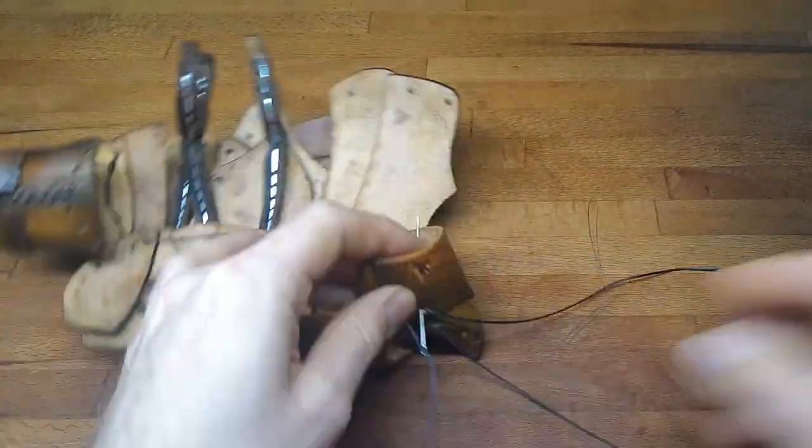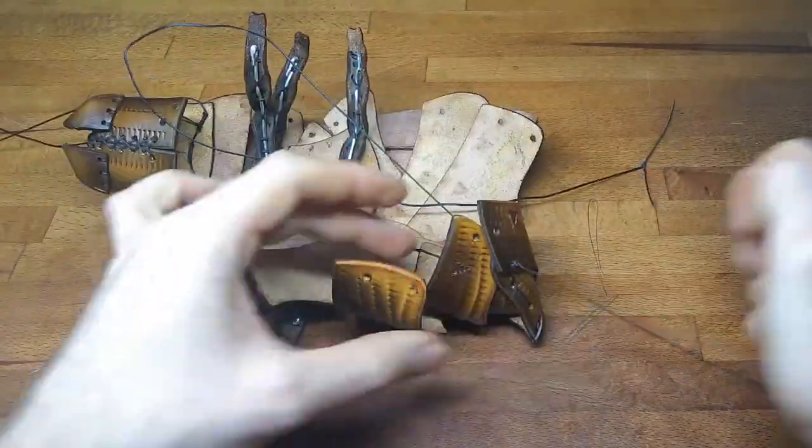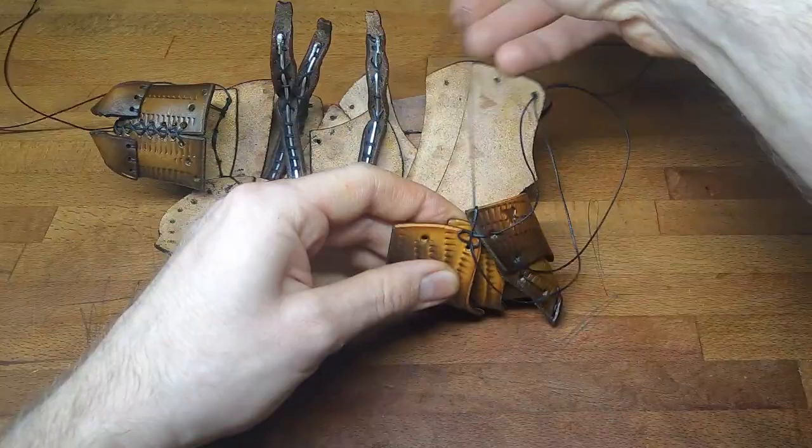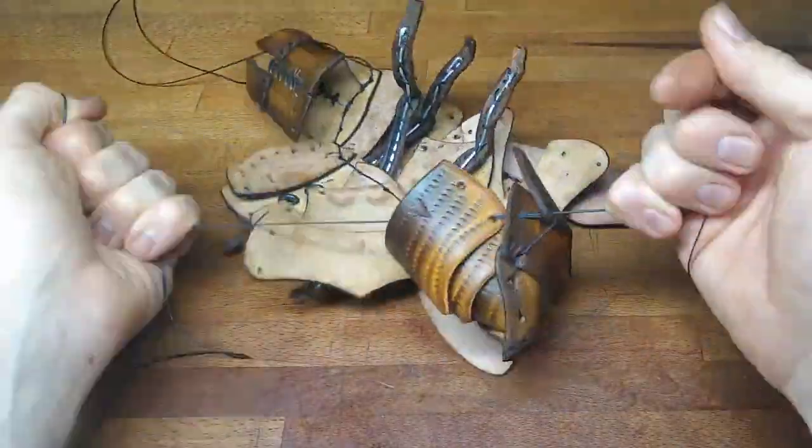Sewing together the other side of the bee is very much the same. Just make sure that you also sew in the legs between the layers.